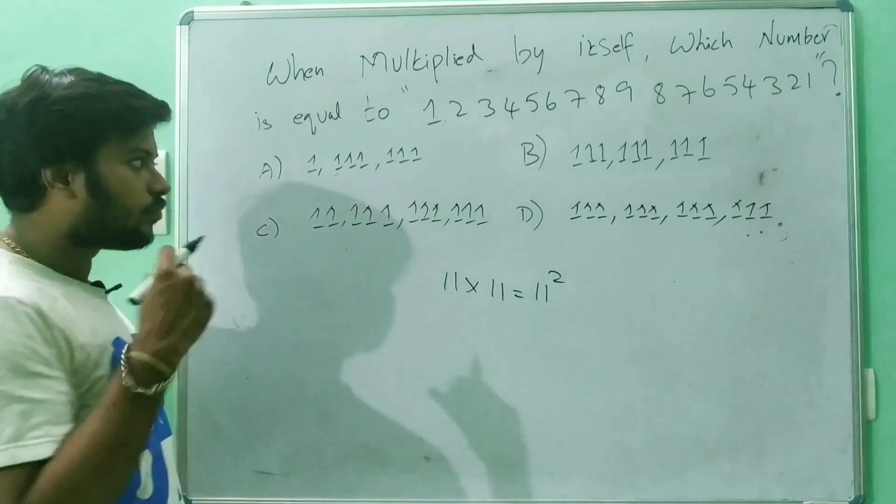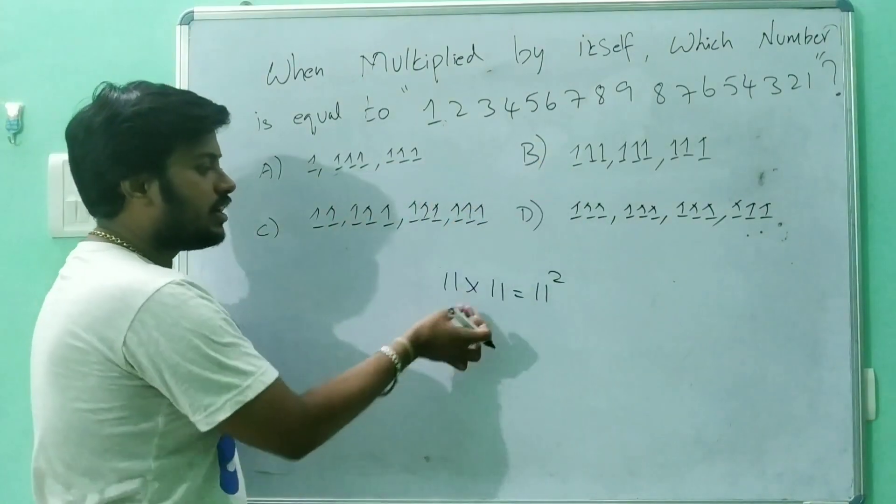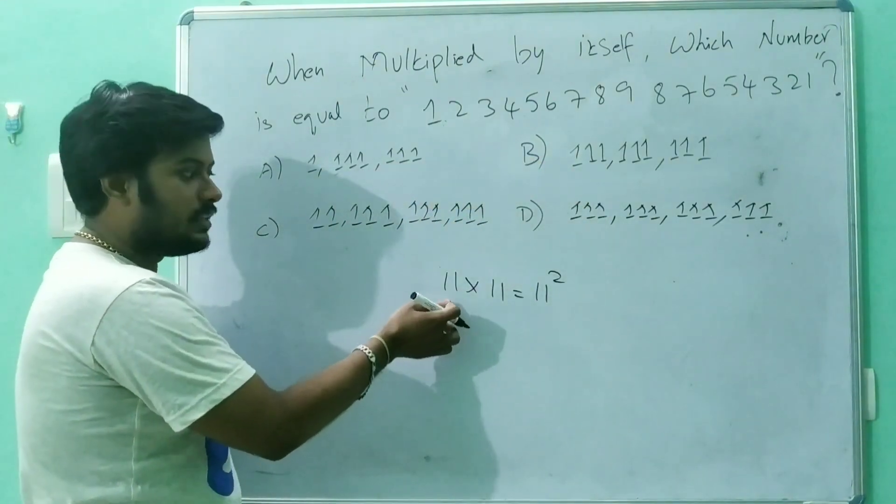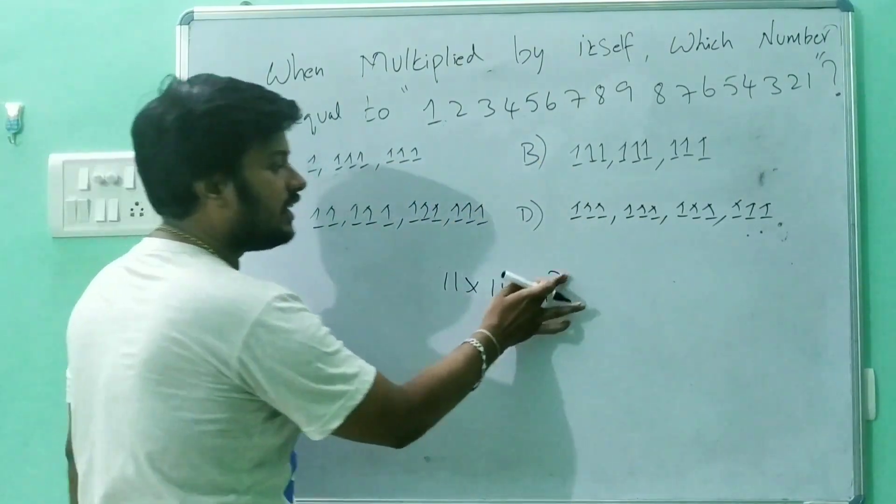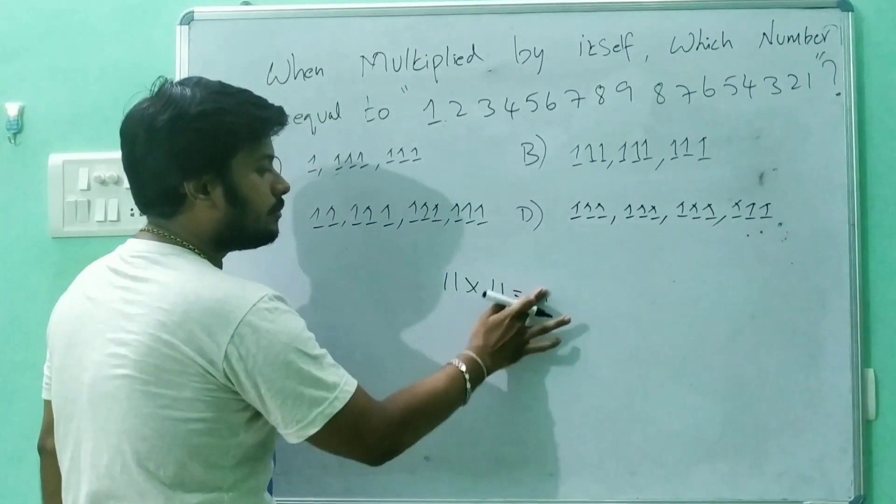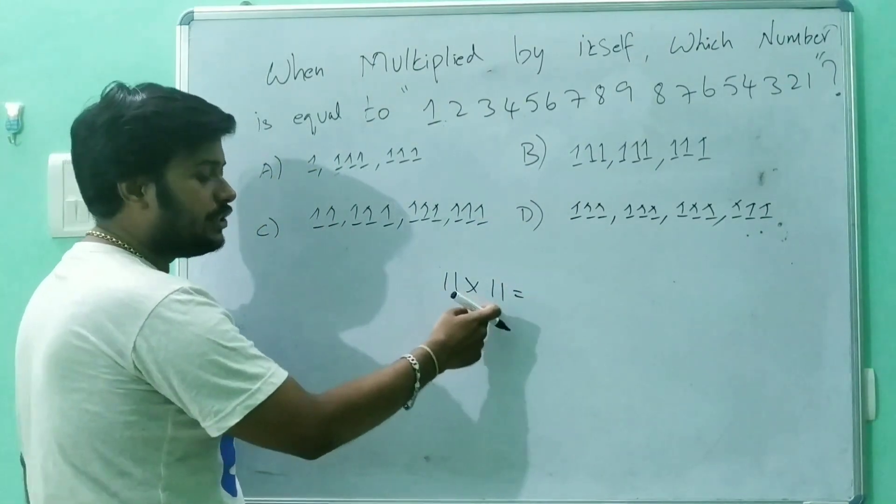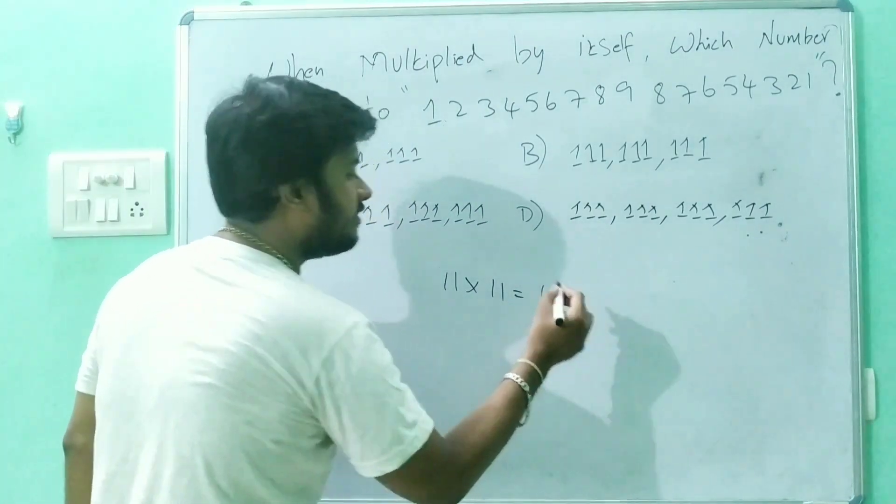Very simple. Since ones are given here, you can experiment with one itself. What is 11 into 11? We'll start with basic two ones: 11 into 11, which is nothing but 121.